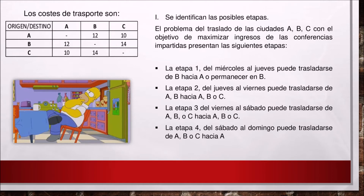Se identifican las posibles etapas. El problema del traslado de las ciudades A, B y C con el objetivo de maximizar ingresos de las conferencias impartidas presenta las siguientes etapas: La etapa 1, del miércoles al jueves, puede trasladarse de B hacia A o permanecer en B. La etapa 2, del jueves al viernes, puede trasladarse de A o B hacia A, B o C. La etapa 3, del viernes al sábado, puede trasladarse de A, B o C hacia A, B o C. La etapa 4, del sábado al domingo, puede trasladarse de A, B o C hacia A.